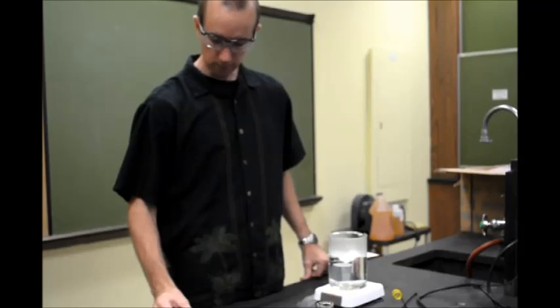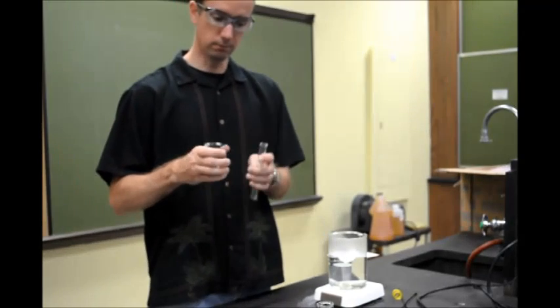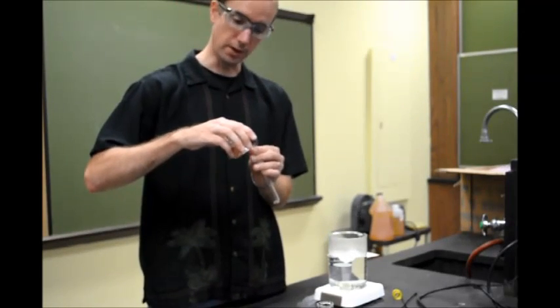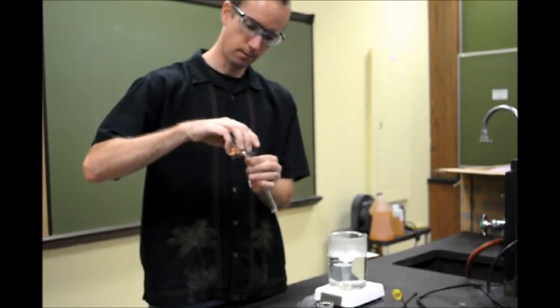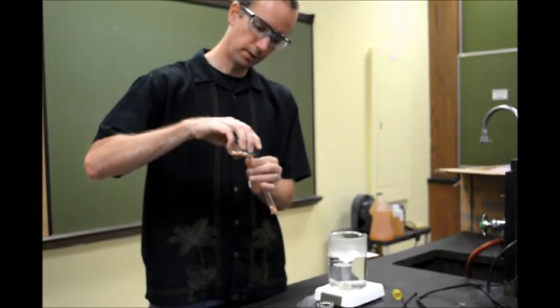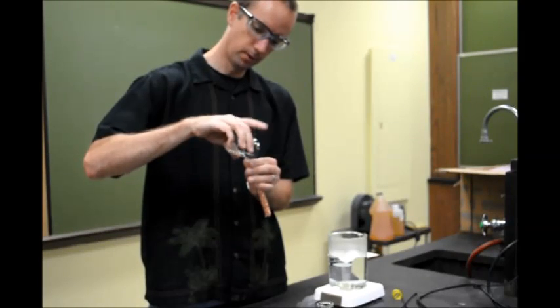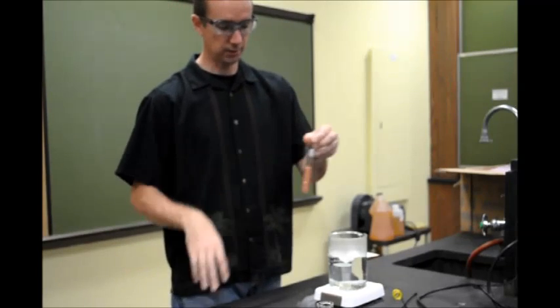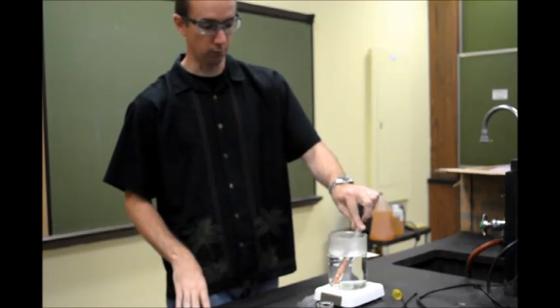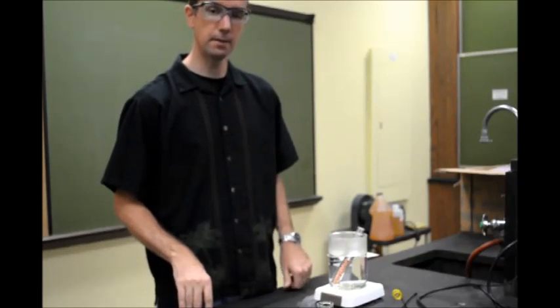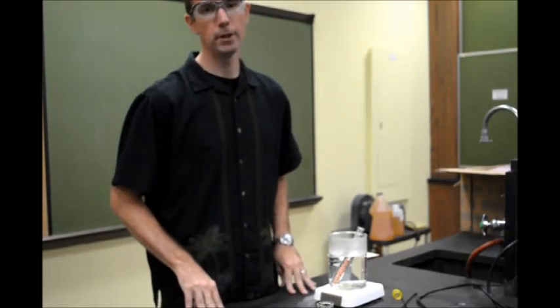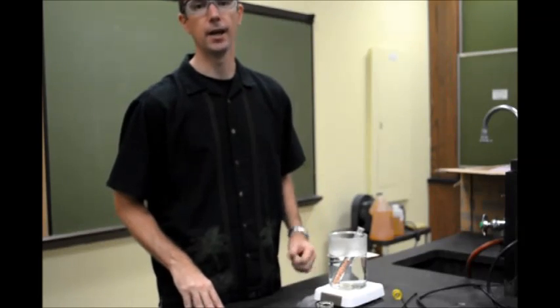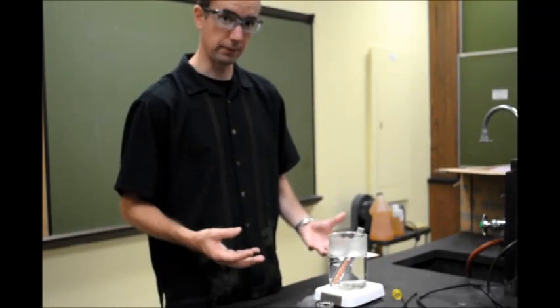This metal will get placed into this test tube very carefully, you won't lose any. There we go. We pour it into this test tube. Make sure it's all there. And then this test tube gets placed into this beaker of boiling water for at least 10 minutes. We want to make sure that the copper inside there and the boiling water are at about the same temperature.